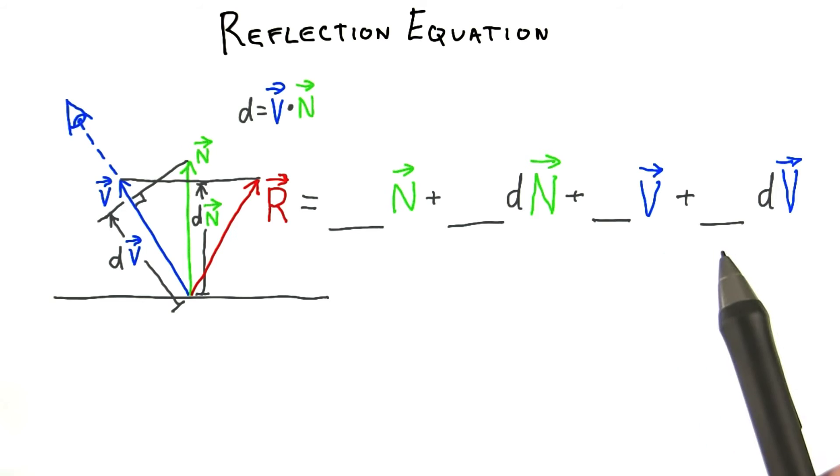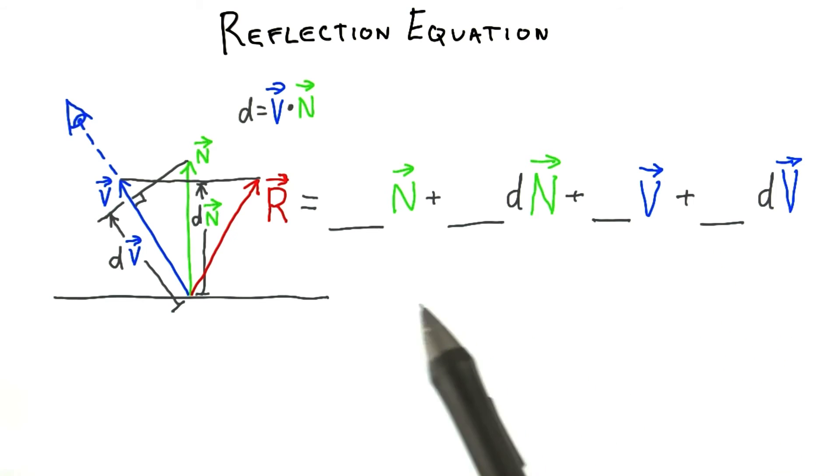You can use any and all of the four vectors in your answer, which should consist of four integers. These integers can be positive, negative, or zero.